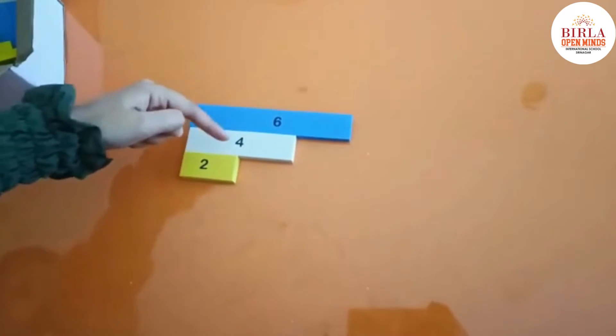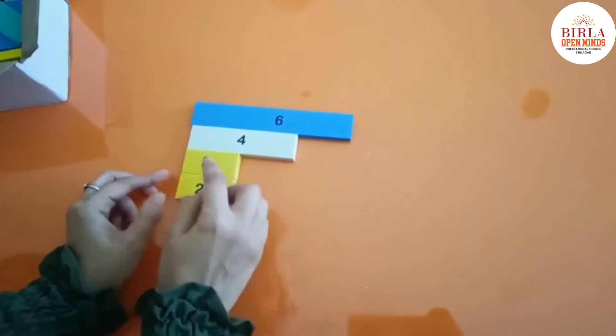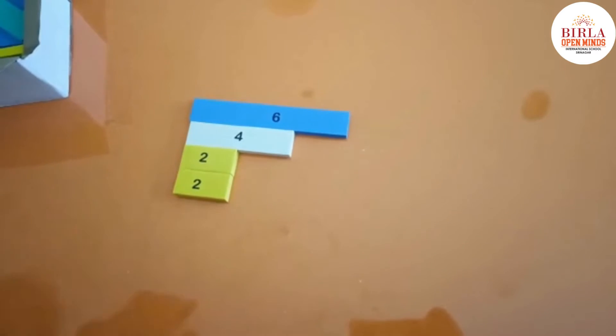Tell me. 4 minus 2 is 2. Now we got the same two strips. Here we have to stop.